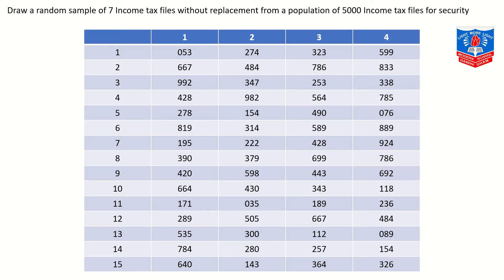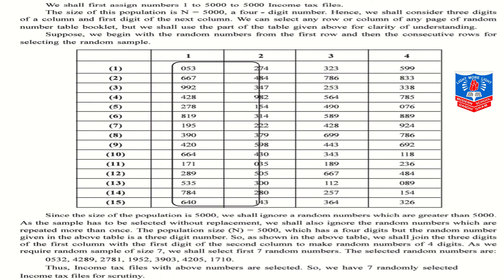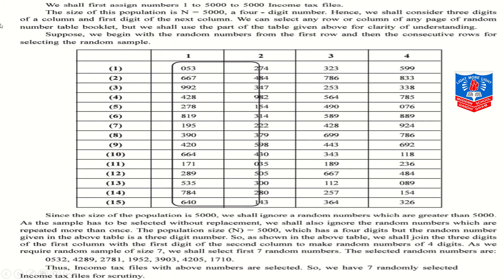Now let us move on to the second problem, which says that we need to draw a random sample of seven income tax files without replacement from a population of 5,000 income tax files for security. The sample size required is seven, from a population of 5,000. We shall first assign the numbers 1 to 5,000 to the income tax files. The size of the population is N equals 5,000, which is a four-digit number.